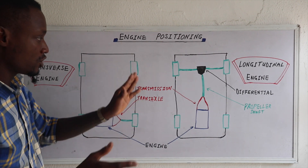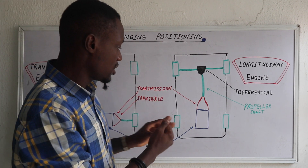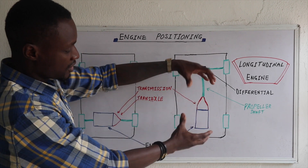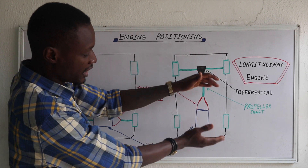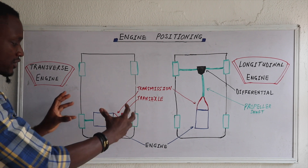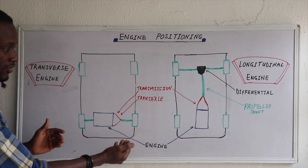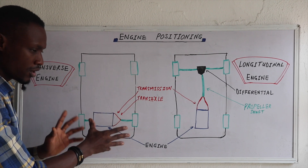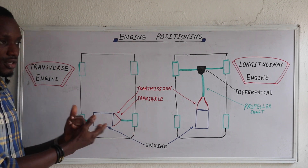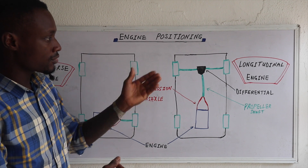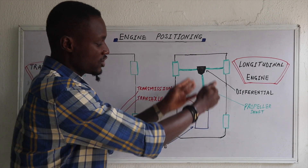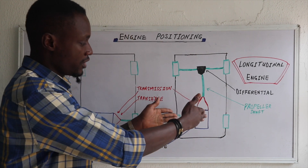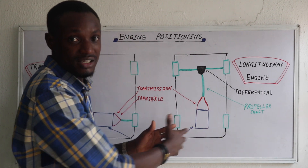An advantage of the longitudinal engine positioning over the transverse is increased displacement. In the longitudinal layout you can have a V12 — there's enough space for 12 cylinders, six on both sides. But if you position a V12 transversely it would take up all the space with no room left for the transaxle. Normally the highest you see in a transverse engine is a V6, though I've seen a V8 transverse engine vehicle, but that's very uncommon. Also, with the engine oriented straight, there's space on both sides for more components and it's easier to work on.